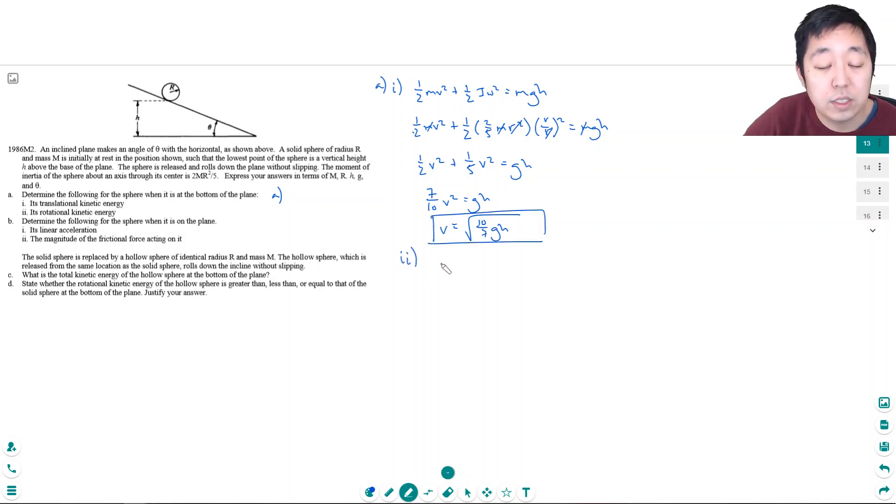And to find omega, it's v over r. So it's just simply one over r times the square root of ten-sevenths gh. So that's its angular velocity.